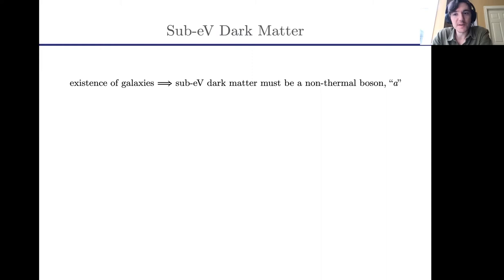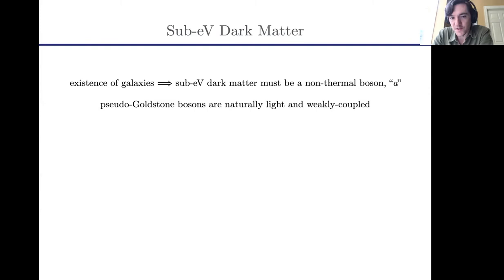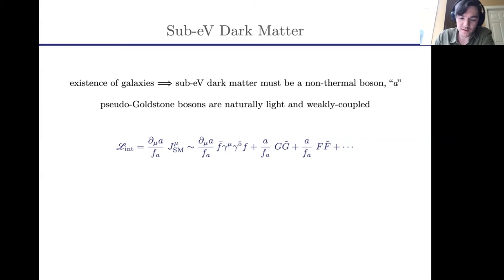So we know it must be a non-thermal boson. If you'd like a theoretically consistent way in which bosons can be light, one natural avenue is to imagine they are pseudo-Goldstone bosons — their mass is protected if they arise from spontaneous breaking of an approximate global symmetry. In this case, these particles are naturally light and very weakly coupled, not necessarily in thermal contact with other matter, if the symmetry breaking scale F is very large. Goldstone bosons couple through higher-dimensional operators suppressed by this large scale F_A, and there are various ways they can couple to standard model currents.